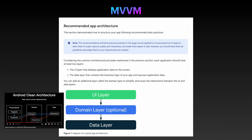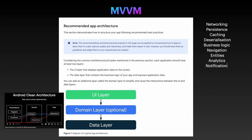This splits the app into layers, and each one can contain different responsibilities. An application has networking, persistence, cache, deserialization, business logic, navigation, entities, analytics, notifications — just to name a few responsibilities. So networking would be in the data layer, along with persistence and cache. Business logic would be in the domain layer, and so on. The full diagram of an architecture can also look like this.